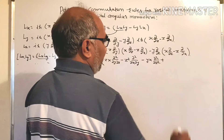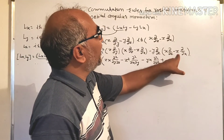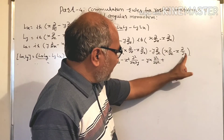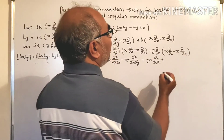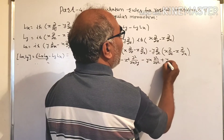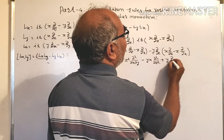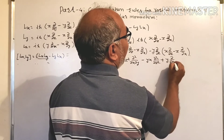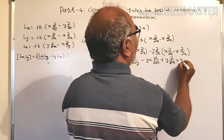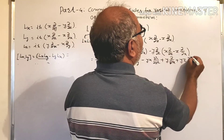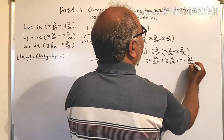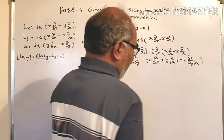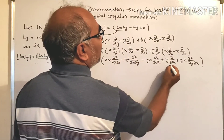Now here, there is a function of z inside, and therefore we get additional terms. We can write this as y ∂/∂x plus yz ∂²/∂z∂x, and so on. This is the function of z appearing inside the derivative, giving us the complete expansion of LxLy.